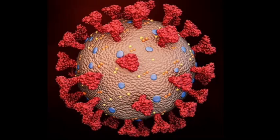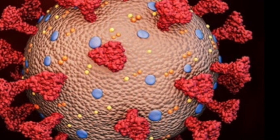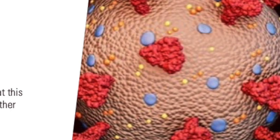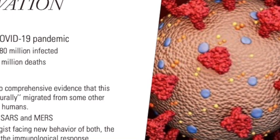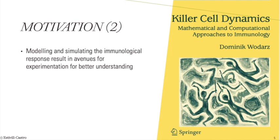The motivation is something that has reached an unprecedented global scale. The global COVID-19 pandemic numbers are alarming, with close to 180 million people infected and close to 4 million deaths. COVID-19 is a new virus never before suffered by any human being. There is mounting evidence that this was a scientific tragedy of disastrous proportions. There is no comprehensive evidence that this virus naturally migrated from some other species to humans. COVID-19 is similar to SARS and MERS. Nevertheless, immunologists are observing new behavior of both the virus and the immunological response.